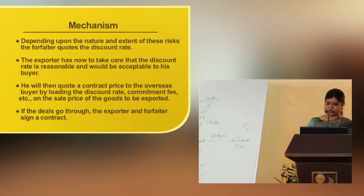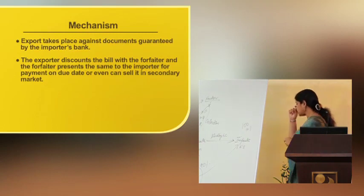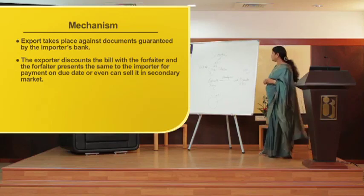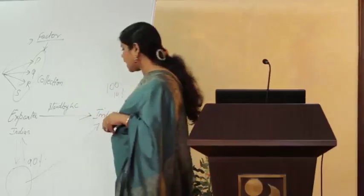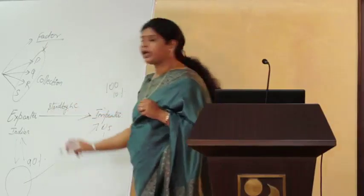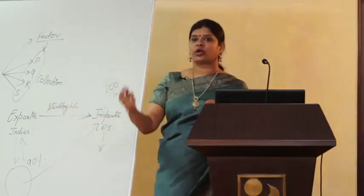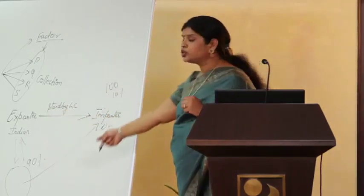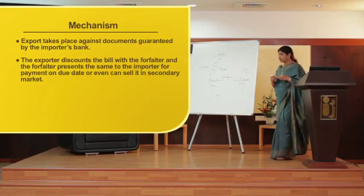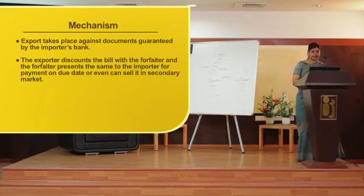If the deal goes through, the exporter and the forfeiter sign a contract. Then the export takes place against documents guaranteed by the importer's bank. There is an importer's bank who is going to issue a standby LC — a letter of credit — and on that basis, once the documents have been issued and reached the forfeiter, the export takes place against the documents guaranteed by the importer's bank.